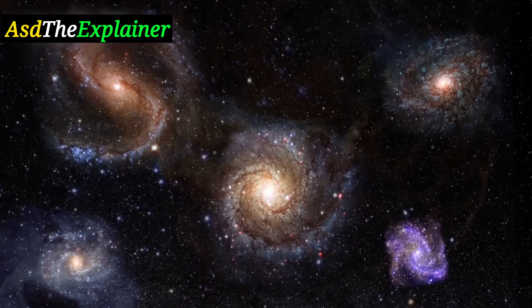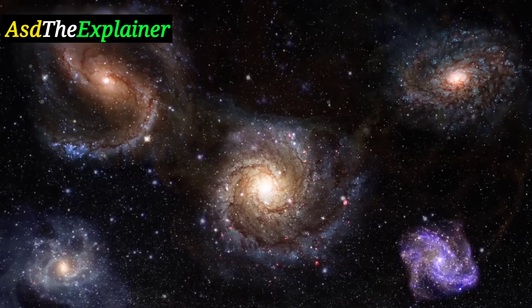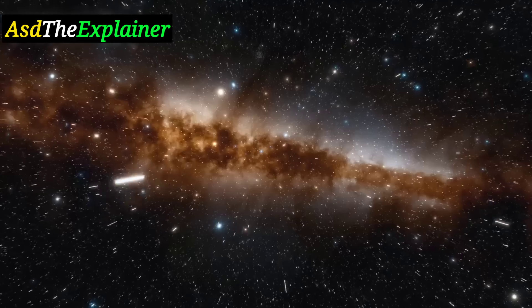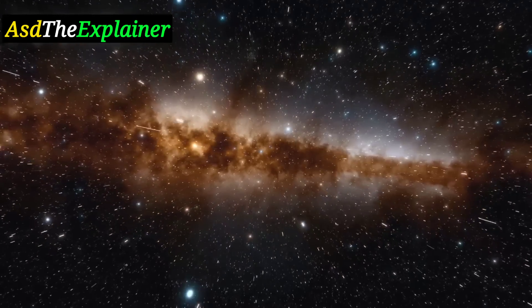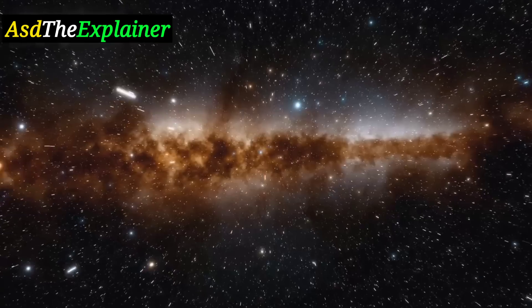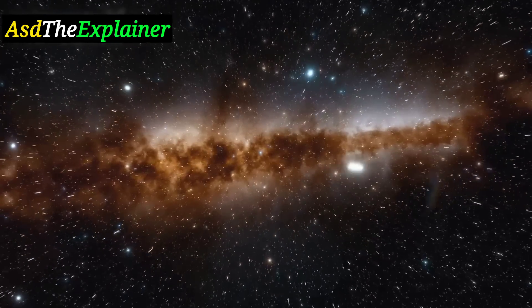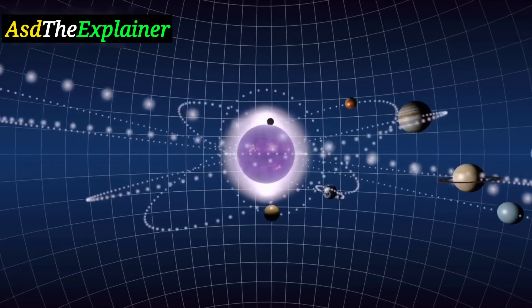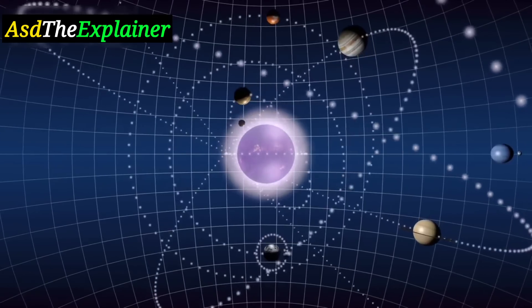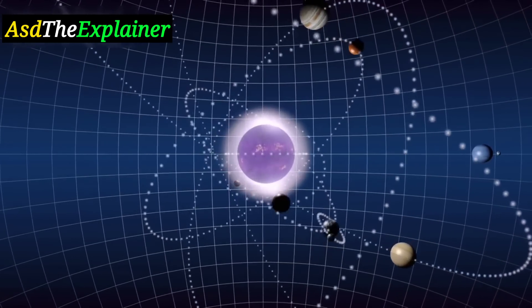Consider this: There are approximately 2 trillion galaxies in the observable universe, each containing an average of 100 million stars. Some galaxies boast an astounding 100 trillion stars, and even our Milky Way galaxy alone houses between 100 to 400 billion stars. It is highly probable that there are numerous planets orbiting these stars, possibly forming complex planetary systems akin to our own solar system.